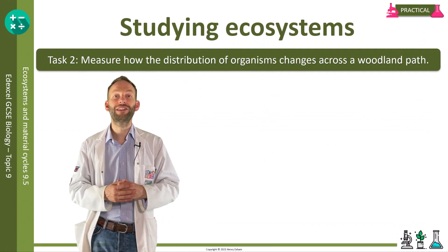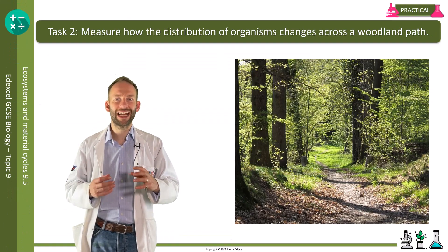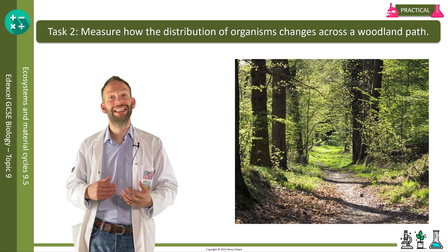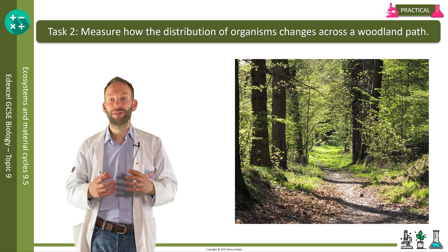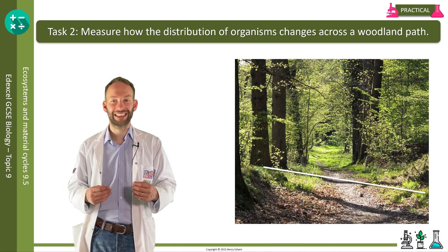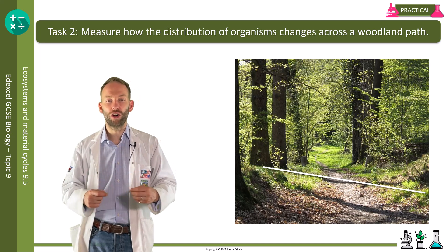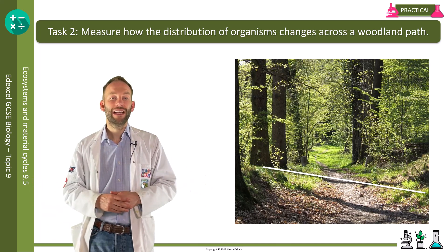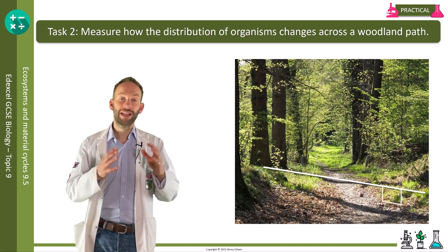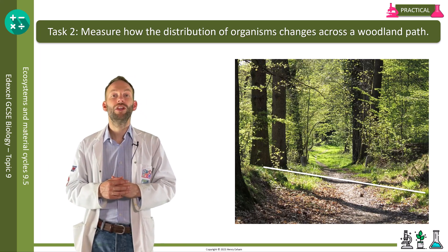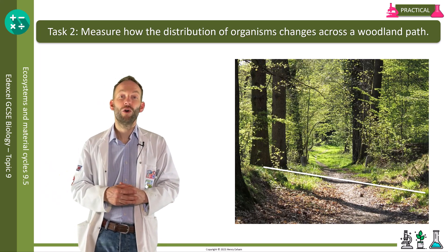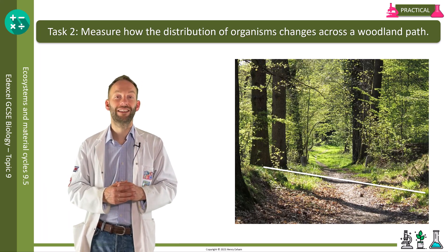Here's another task: measure how the distribution of organisms changes across a woodland path. Sometimes you want to see how the distribution of a species changes across a habitat. You may take abiotic factor readings such as light levels or soil acidity, and then investigate if there's a relationship between those factors and the distribution of that species. In this case, another piece of apparatus is needed called a transect — basically a long tape measure. Instead of randomly placing your quadrat, you place it systematically along the transect. With each quadrat you take along the transect, you could count the number of a particular species and see how its distribution changes, or count the number of different species in each quadrat to give a measure of biodiversity.